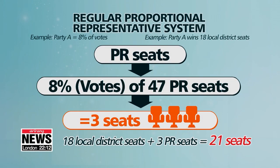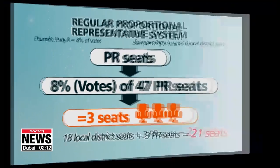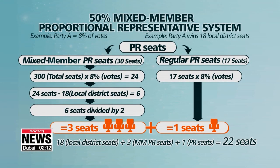Before the changes, the regular system reflected a party's voter turnout in relation to the 47 PR seats. But with the new system, only 17 out of the 47 seats will follow the existing system. The remaining 30 seats will be distributed based on voter turnout in relation to all 300 seats, then subtracting the number of local district seats obtained and dividing the difference by two.